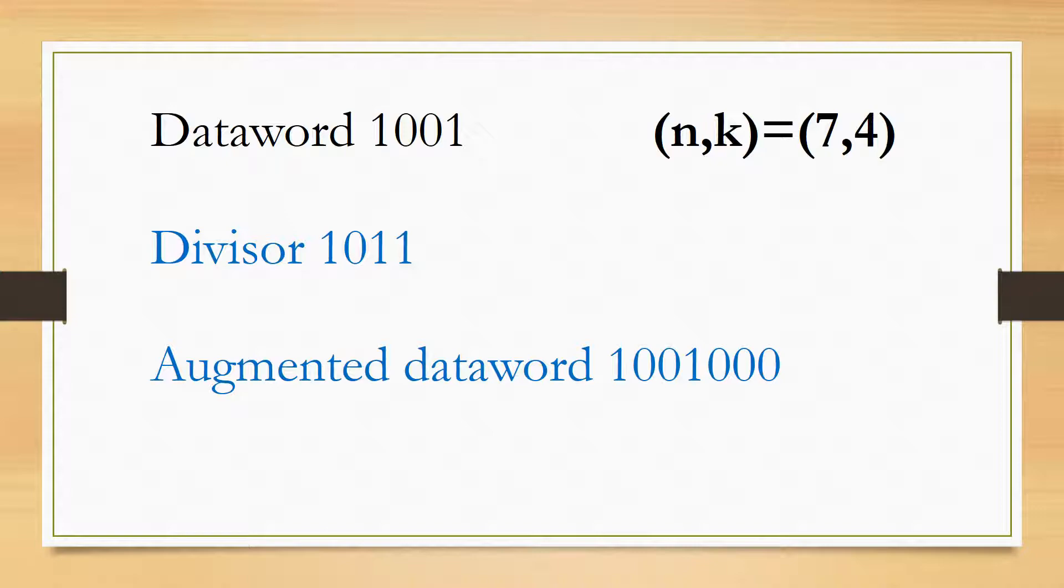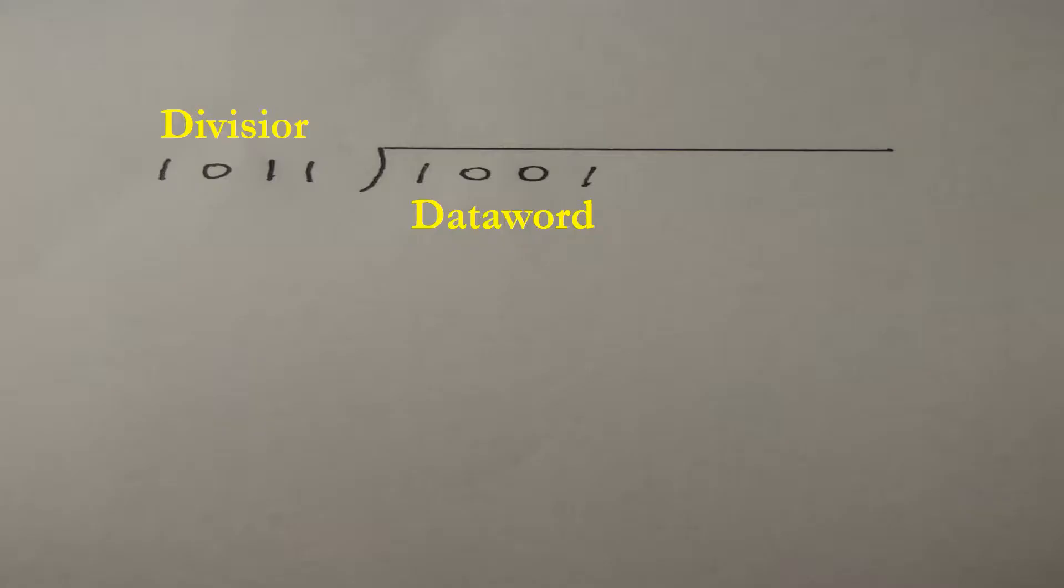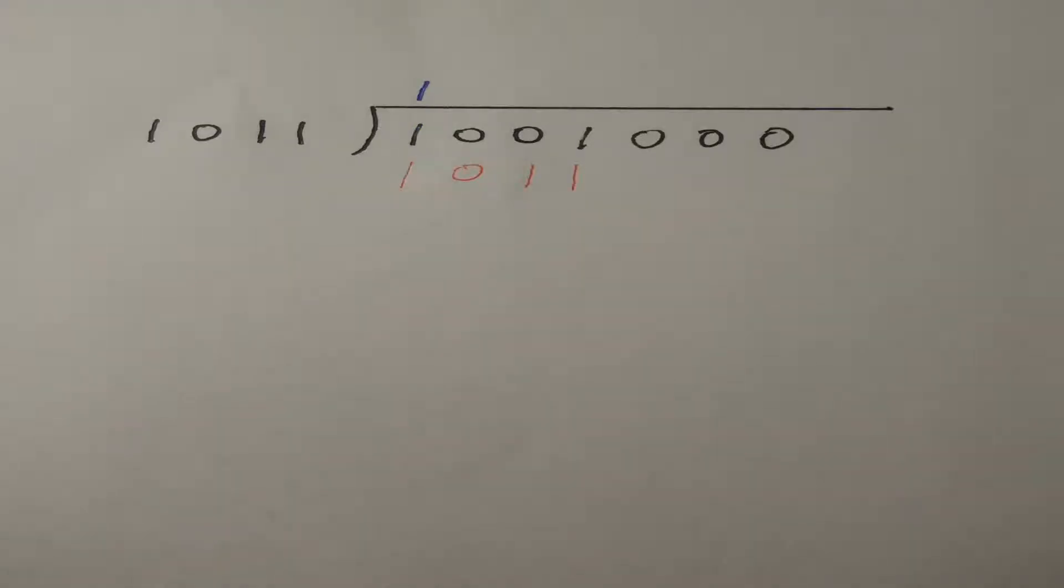Now let's calculate this problem. The divisor is 1011. The dataword is 1001000. First we put 1 as the quotient, then put 1011 down.